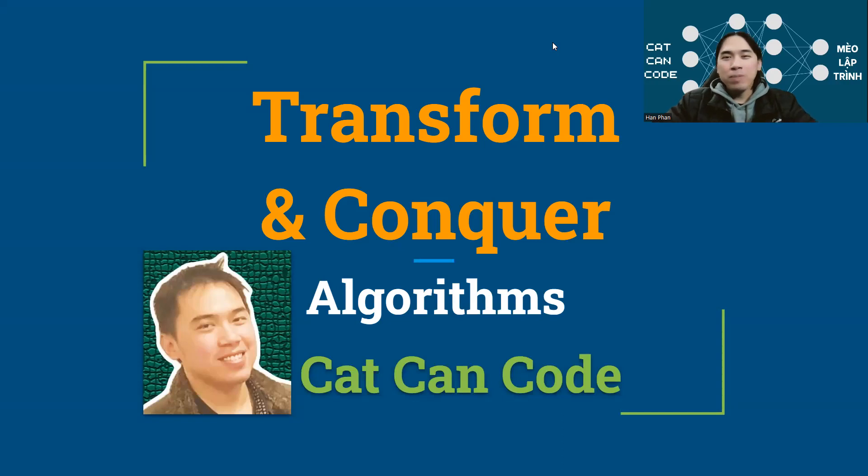Hello everyone! Welcome to a new video of Dr. Cat Can Code. In this video I'm going to talk about Transform and Conquer. This is a very important algorithmic strategy to convert a hard problem into an easier problem that can be solved more effectively or more easily.